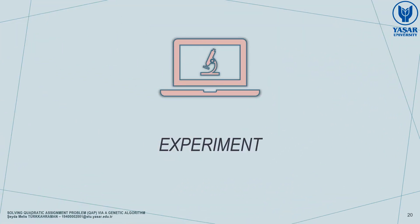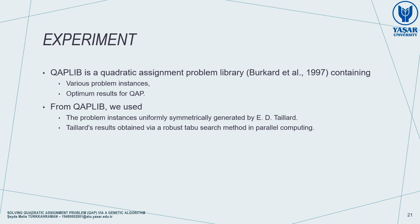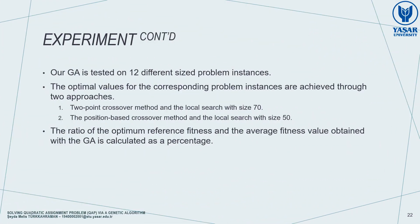After roughly describing our genetic algorithm, let me talk about the experiment. There is a quadratic assignment problem library, QAPlib, which contains various problem instances and optimum results for QAP. We used the problem instances uniformly and symmetrically generated by Taillard. As a reference of success, we used Taillard's results obtained via a robust taboo search method in parallel computing. We tested RGA on 12 different-sized problem instances using the methods and parameters explained.